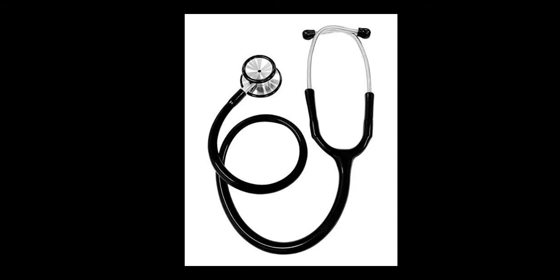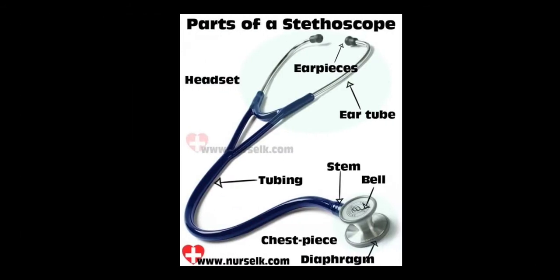This is a stethoscope — the most important instrument. Auscultating means we are listening to body sounds with the help of an instrument called the stethoscope. The parts include: ear pieces, headset, ear tubes, tubing, stem, bell, and chest piece. The chest piece is kept against the chest or abdomen to hear the sounds.